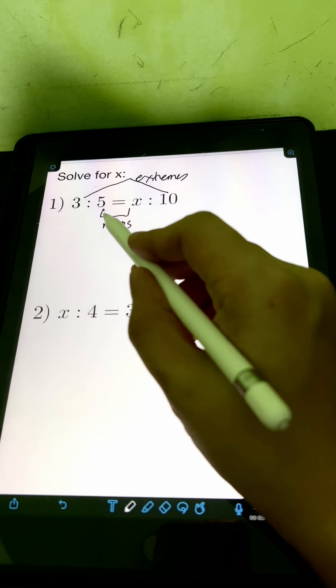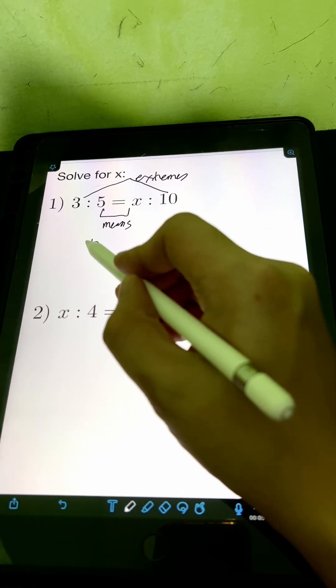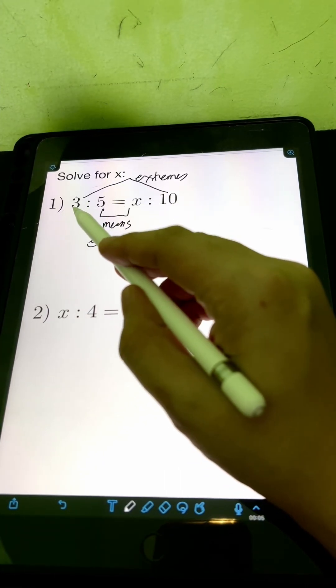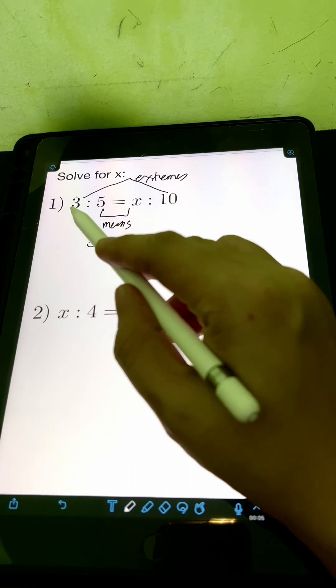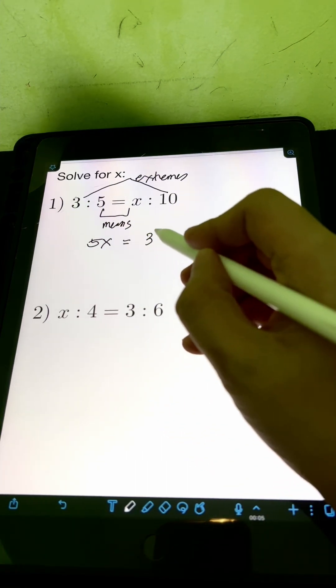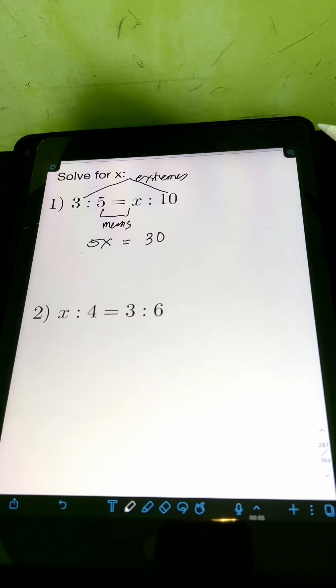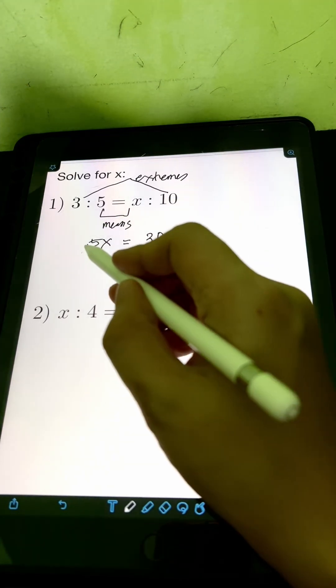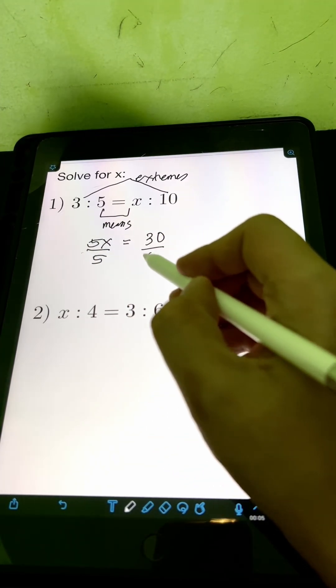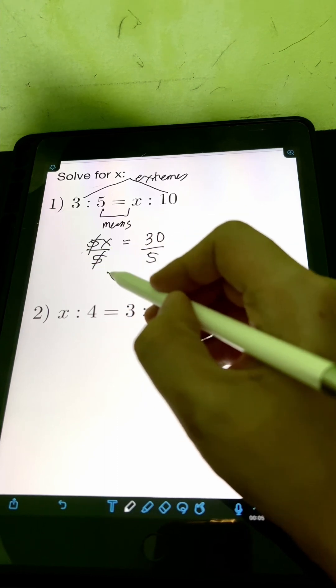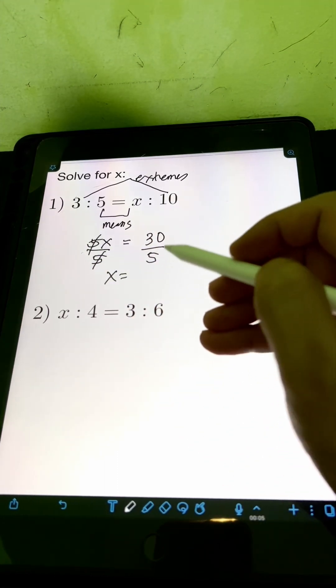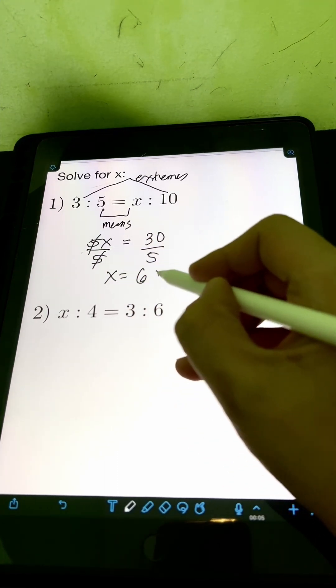So we have 5 times x or simply 5x equal to product of the extremes, 3 times 10 or 30. Then solving this equation for x, we simply divide both sides by 5. Cancelling out 5, x is equal to 30 divided by 5 or 6.